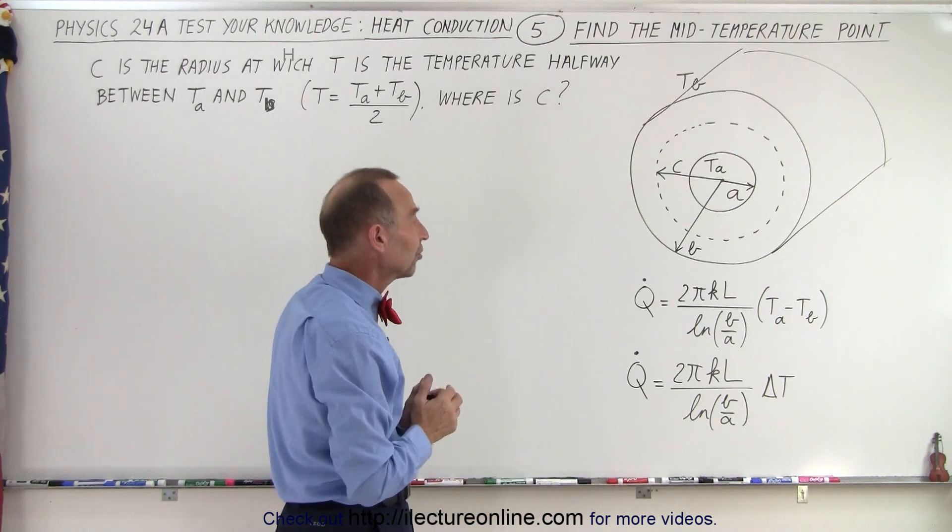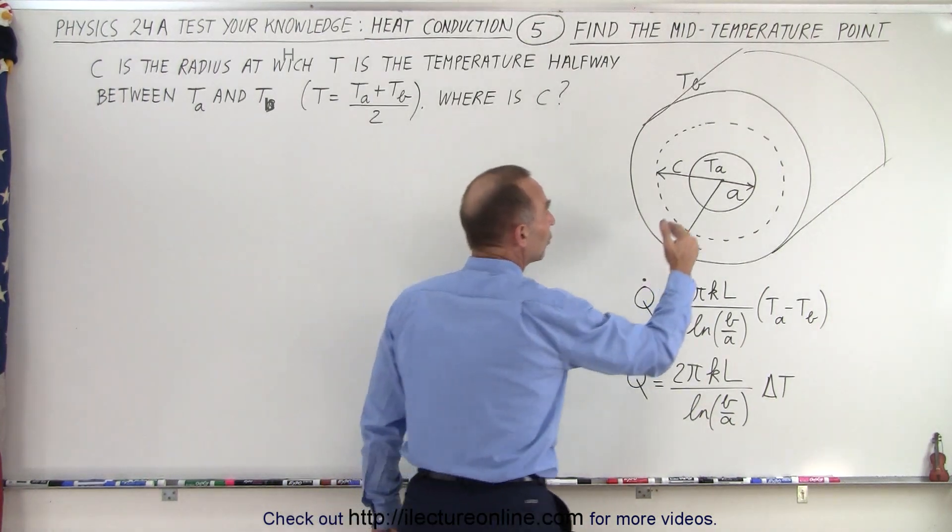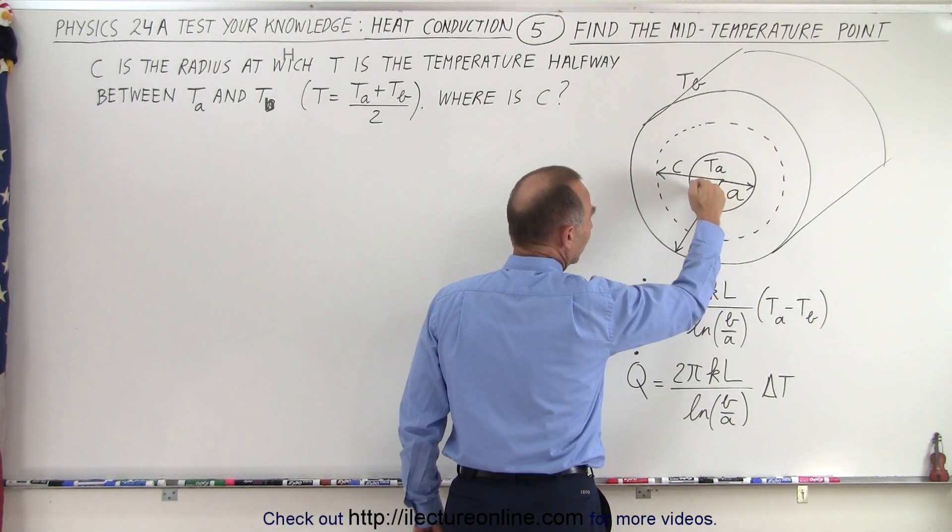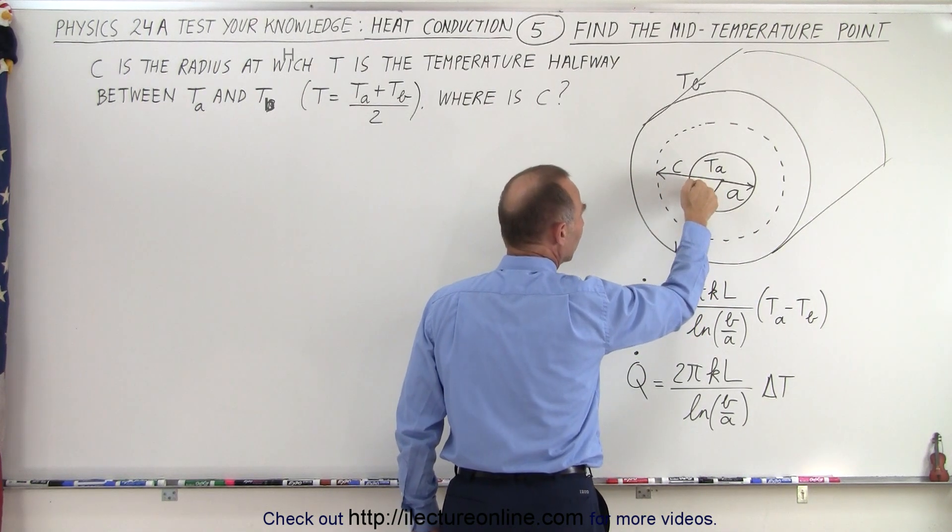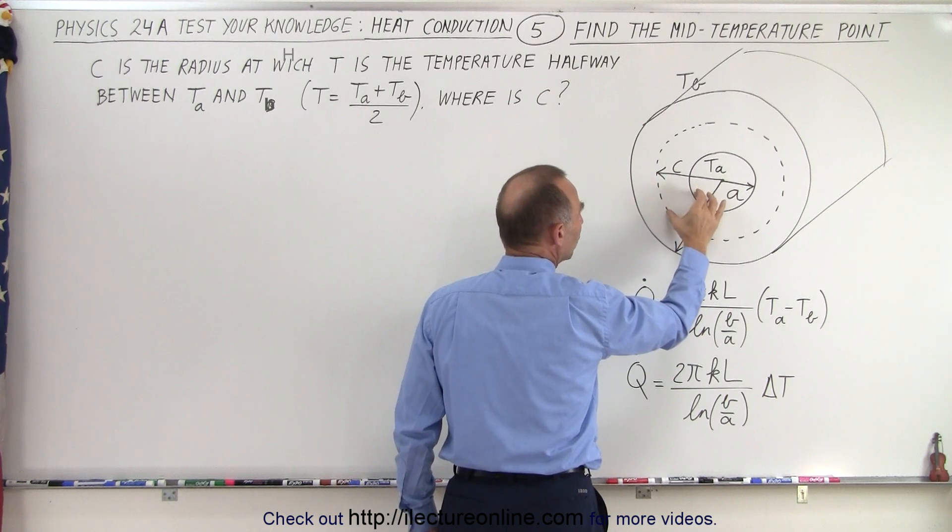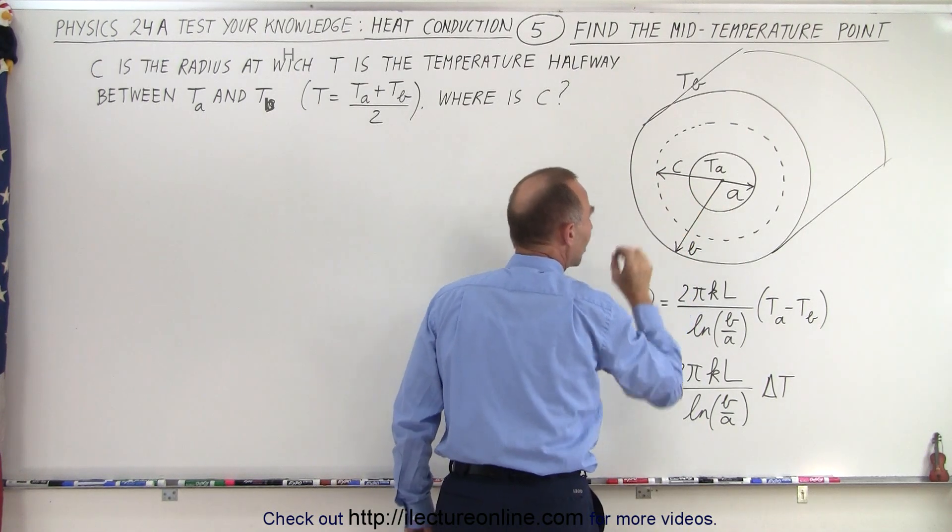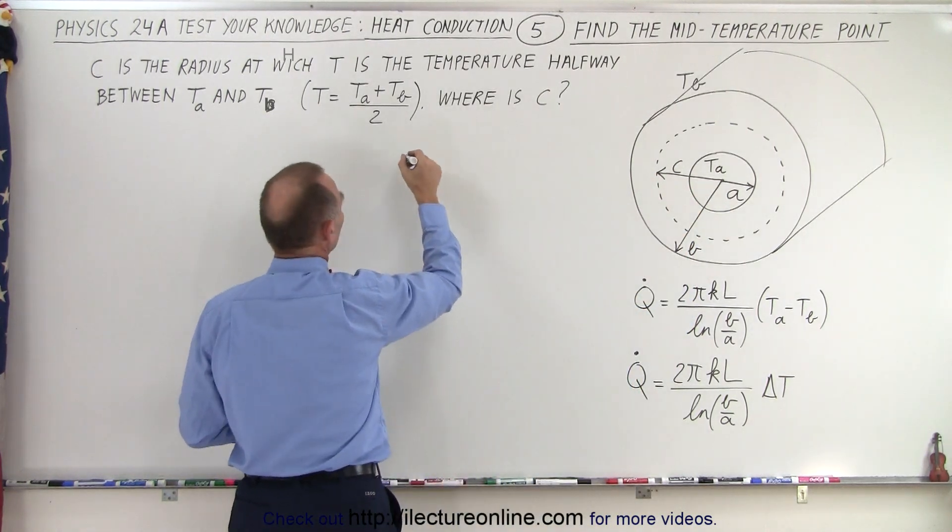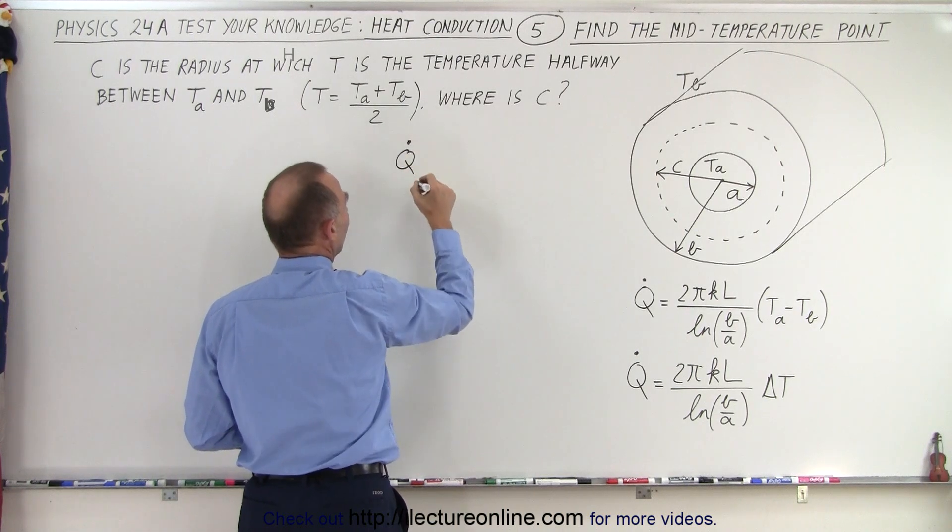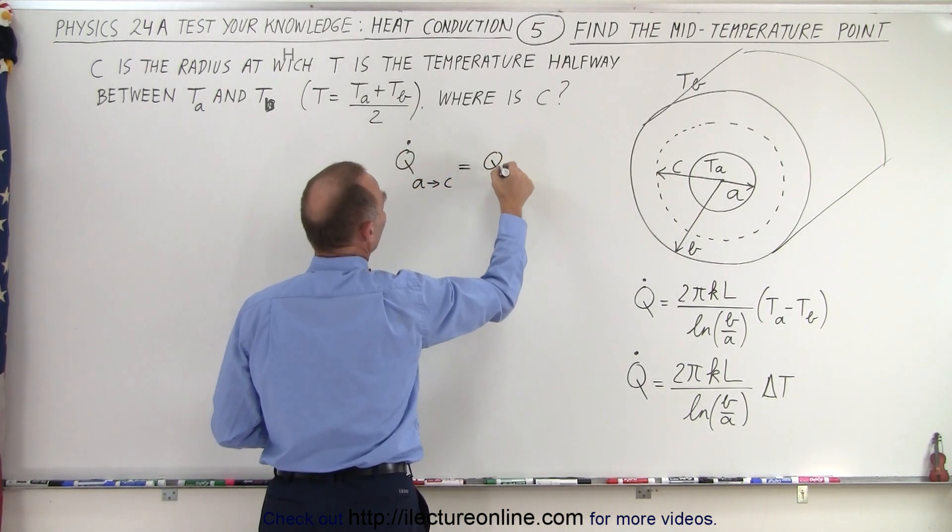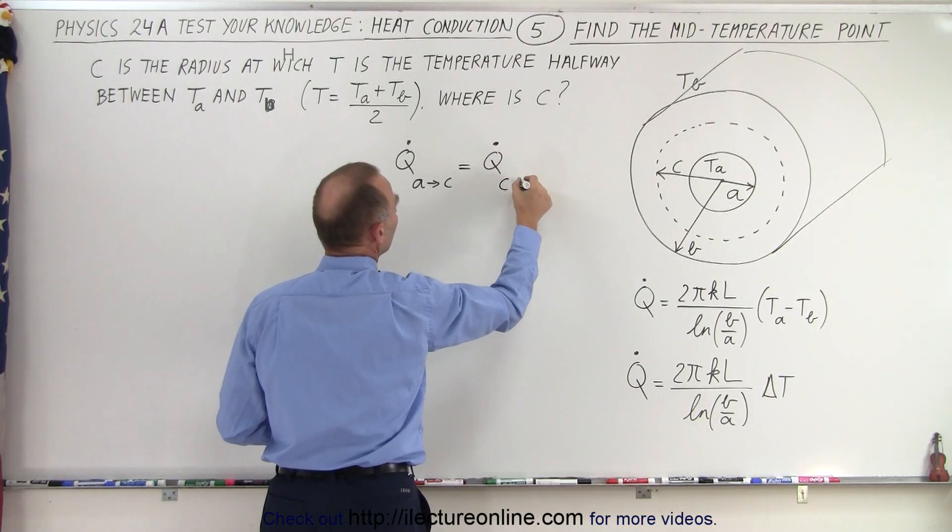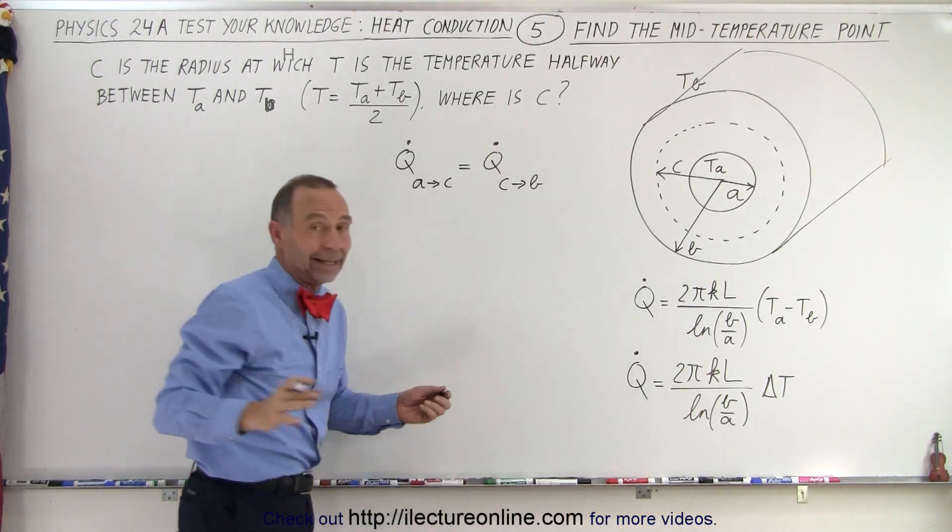Which means that the Q dot, the heat transferred from the inside to the point where the temperature is halfway between temperature A and temperature B, that Q dot is the same here as it is here. So what we can say is that the Q dot traveling from A to C must equal the Q dot traveling from C to B, because the Q dot is a constant.